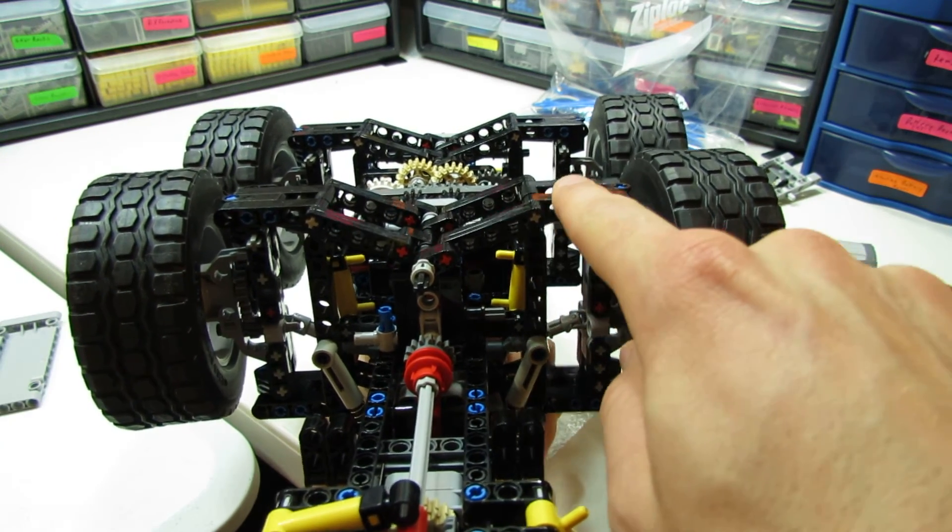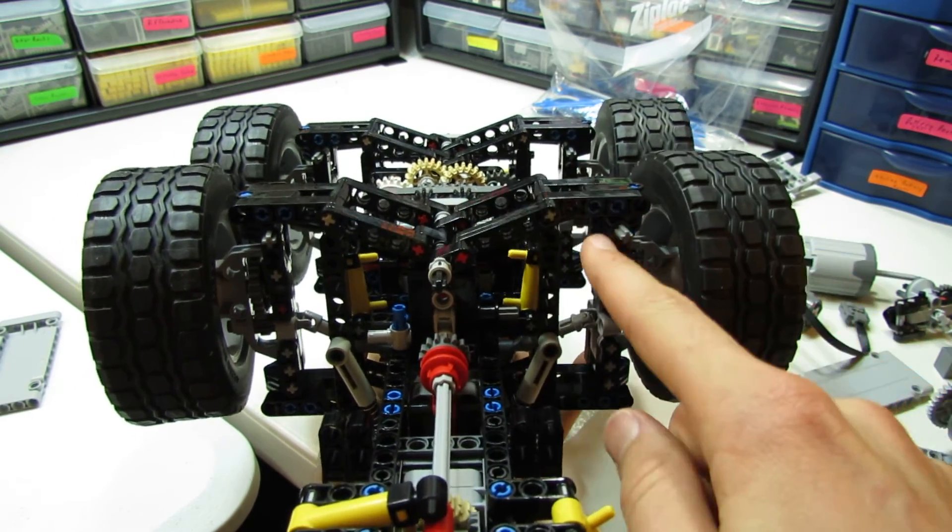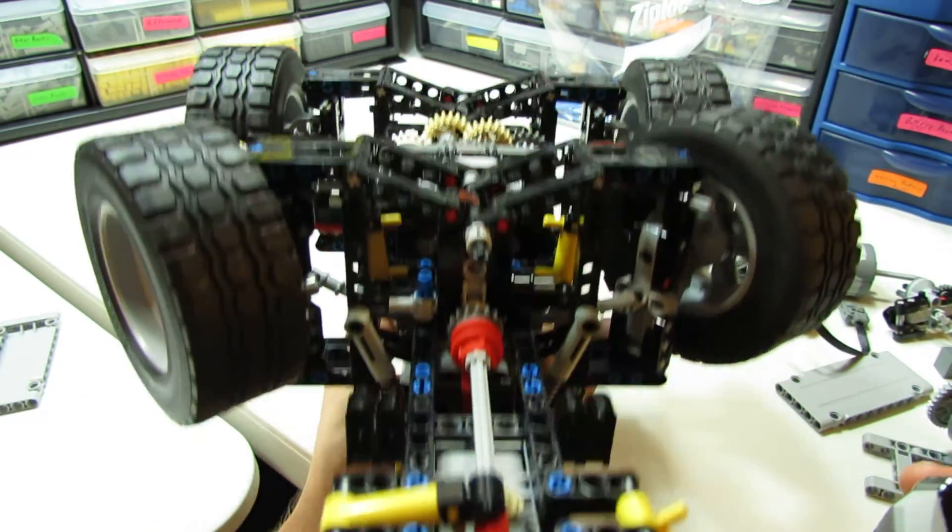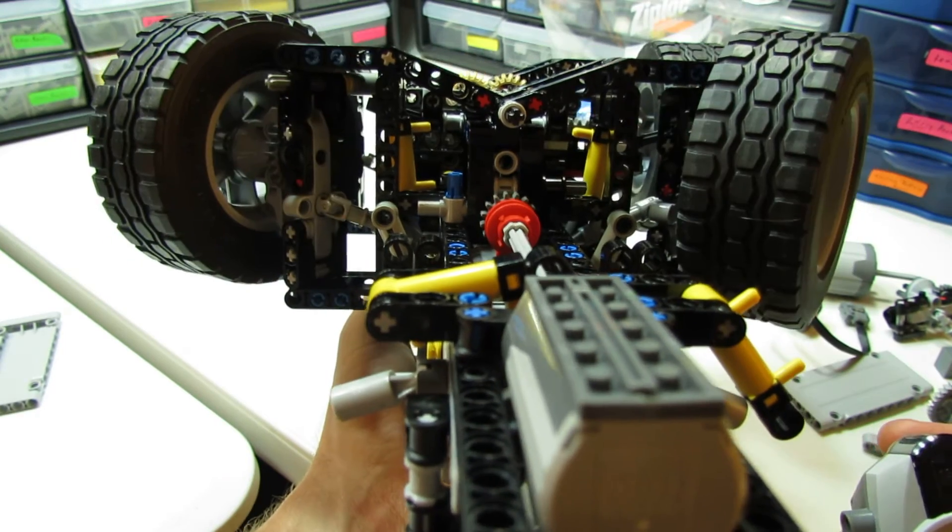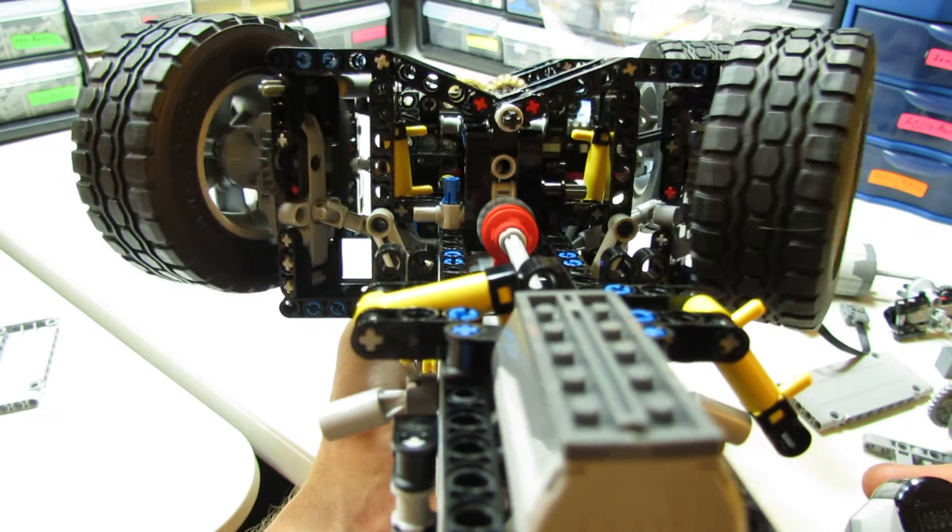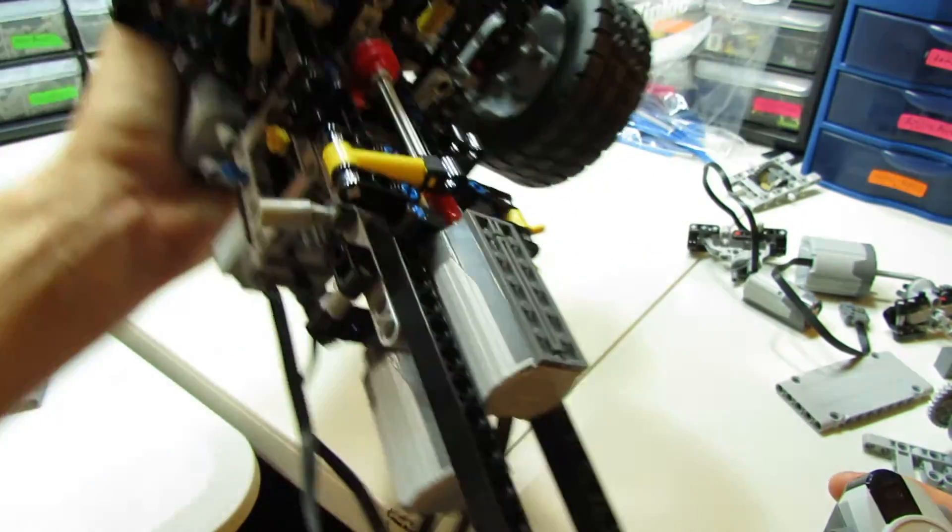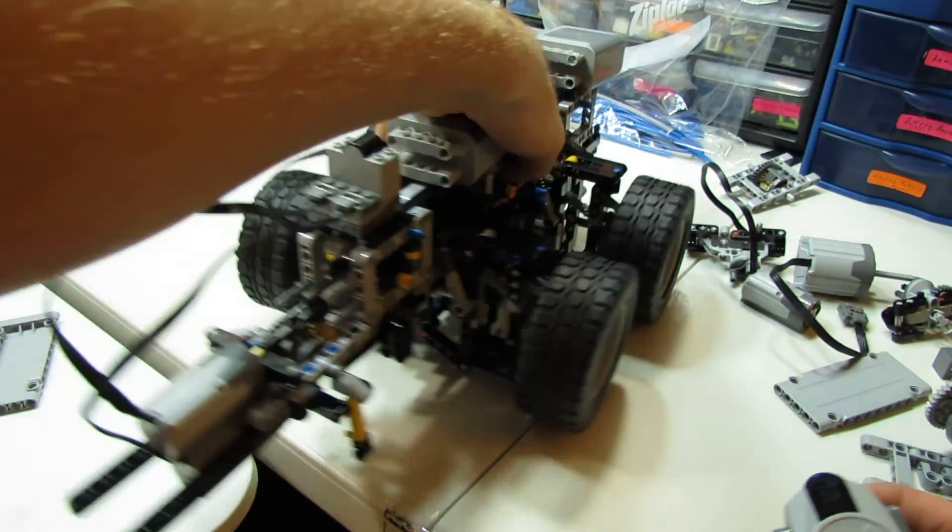I actually thought about running it through the suspension arms itself. But the problem with that is when you turn the steering, if you'll see that large mass sliding back and forth, that kind of blocks a lot of the space that you have. So I haven't really figured that out yet.